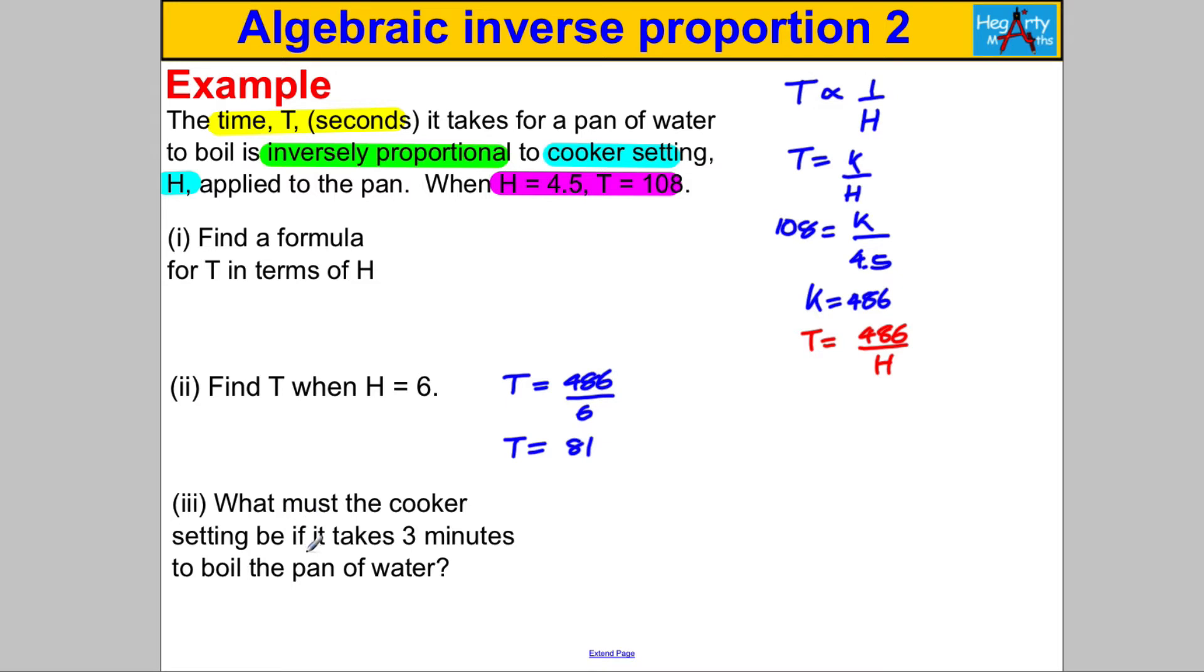The next one: what must the cooker setting be if it takes three minutes to boil the pan of water? Here's the classic mistake: students say that T is 3. Can you tell me why that's wrong? Three minutes - T had to be in seconds for this formula to work. So we must convert the three minutes into seconds before we do anything. You should know that one minute is equal to 60 seconds, therefore three minutes must be 180 seconds. So T in this question is not 3, it's actually 180.